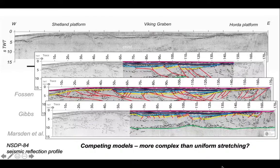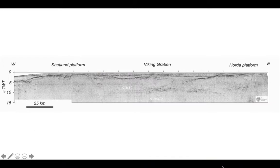So these are competing models, but is it necessary to invoke models that are more complicated than the uniform stretching model? Let's think about that as we interpret the section.